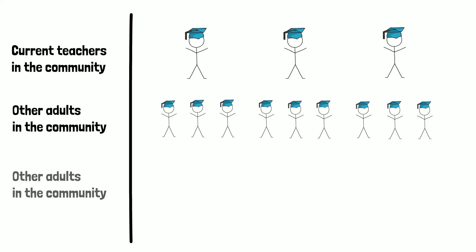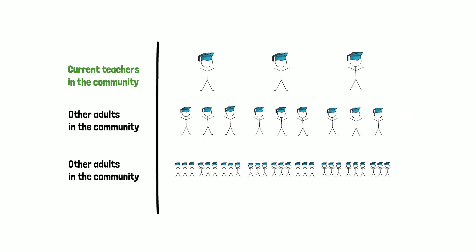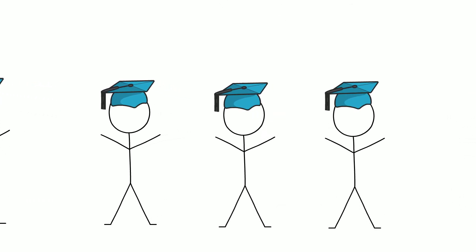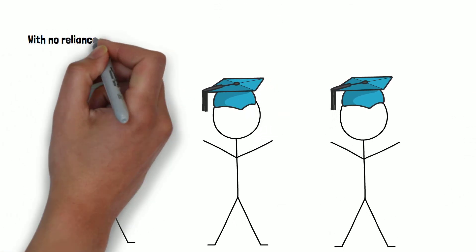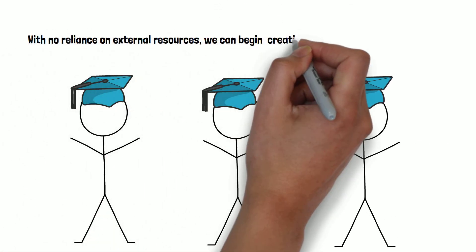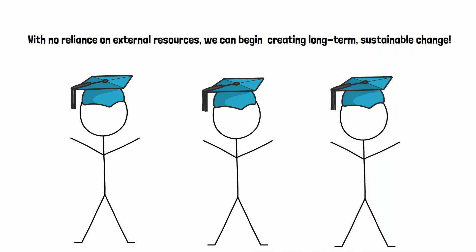Once they have qualified, they are then put in charge of training another class of people to become teachers, and so on. This project uses local people to teach their own community while increasing the supply of qualified teachers exponentially. With no reliance on external resources, for example temporary volunteer teachers from the UK, we can begin creating long-term sustainable change, due to the simple fact that local people are less likely to move away from their own community.